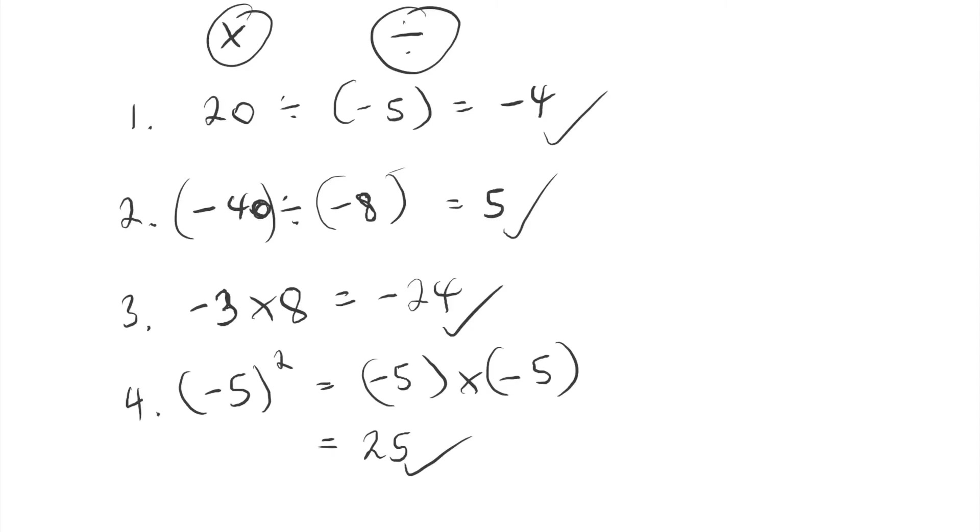And finally, let's look at one more example. We have minus 50 divided by minus 10 written like this. What would your answer be? 5. And why is it 5? What rule are you using? A negative divided by a negative is a positive. So that's nice and clear. Yeah. Awesome.